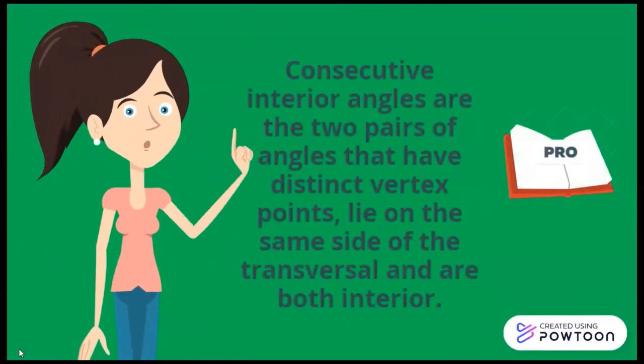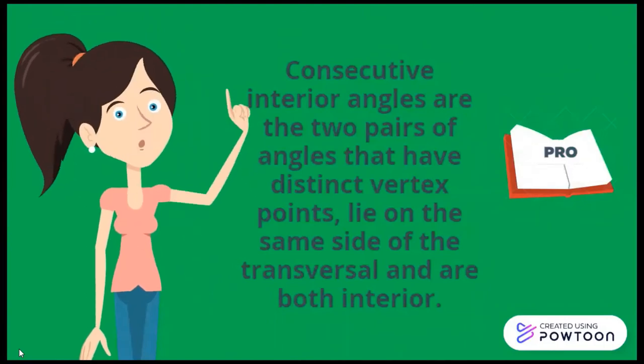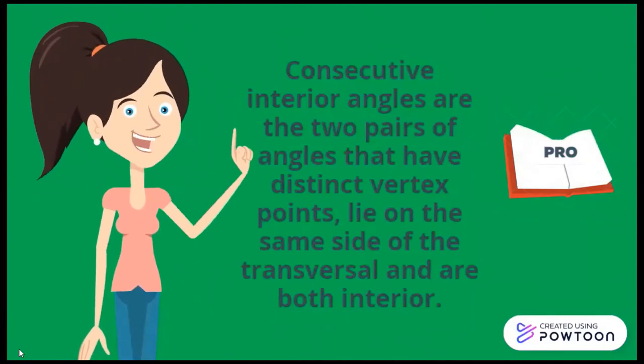Consecutive interior angles are two pairs of angles that have distinct vertex points, lie on the same side of the transversal, and both are interior angles.